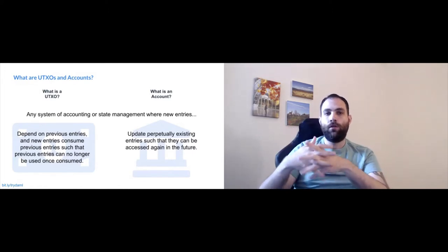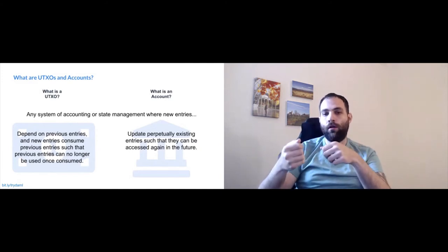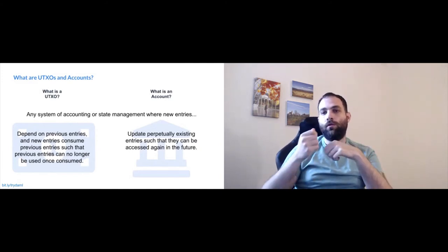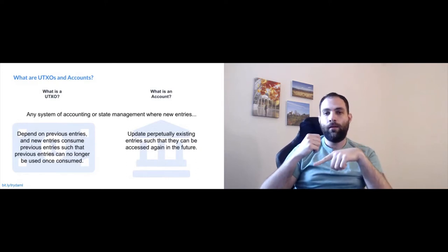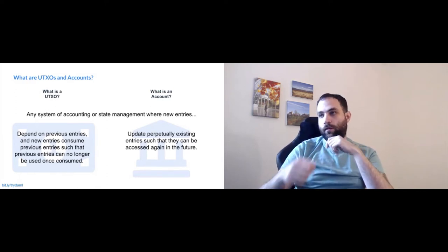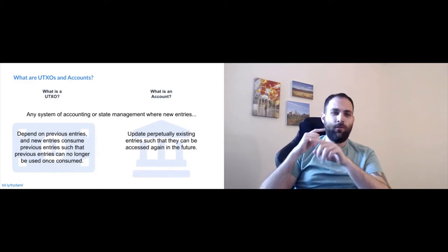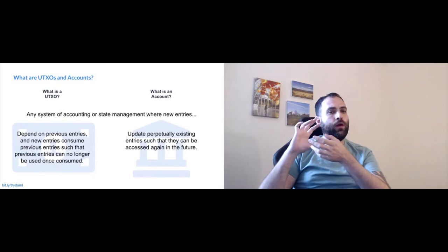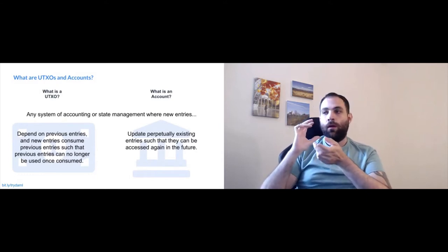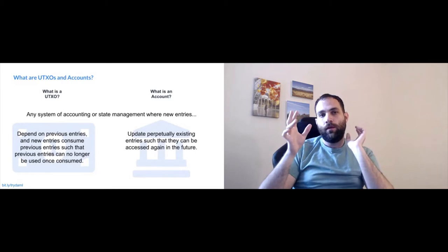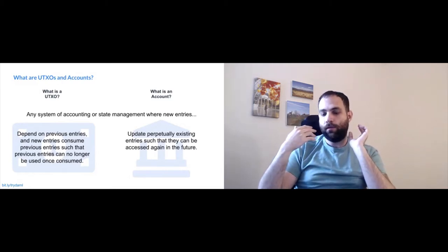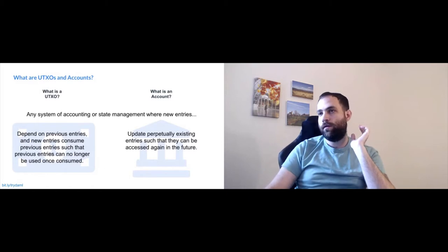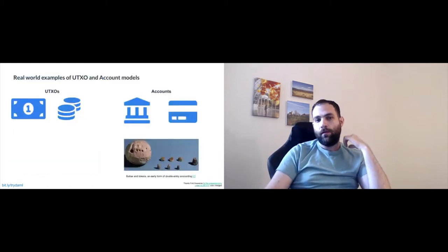In accounts, there are perpetually existing entries that can be updated and accessed again in the future. For example, that would be like a credit card — if I gave you my credit card number, you could charge it, an account balance would update on my end, and I could use that same number again somewhere else. Accounts sometimes fit more closely to how we model and conceive of the world, but that can also be a disadvantage.